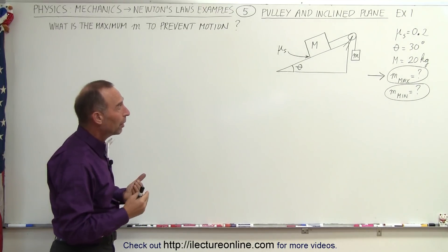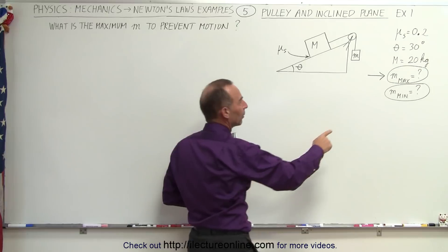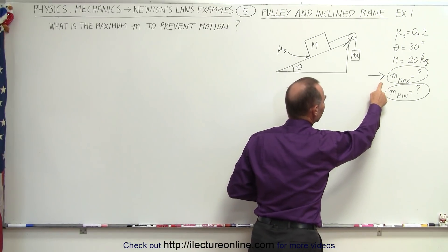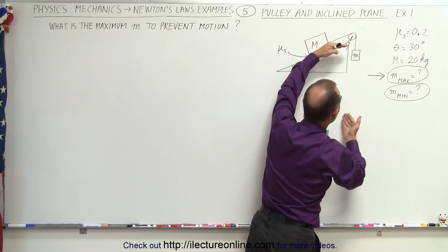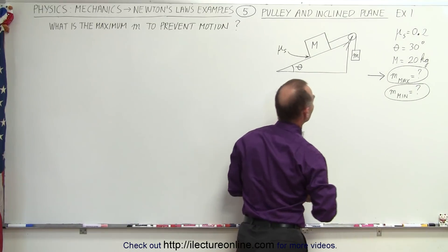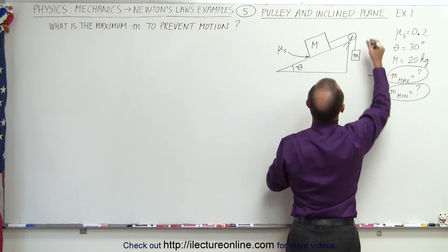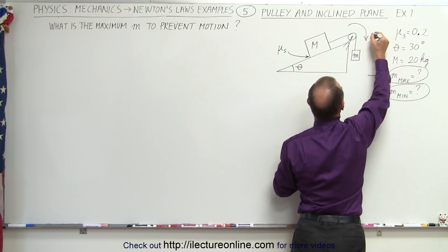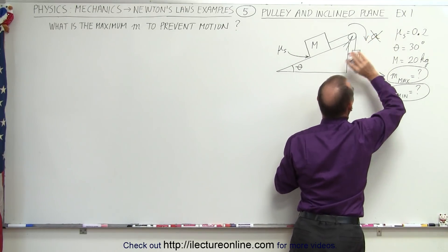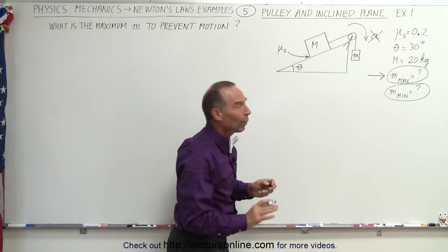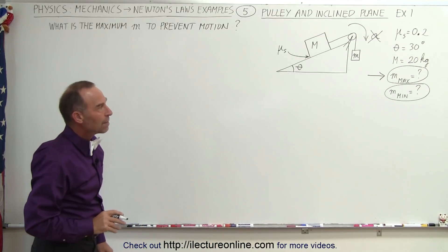We're going to do this in two parts. First, we're going to figure out what the maximum m can be to prevent the whole system from accelerating in this direction. The larger you make m, the more likely it is for the acceleration to be in this direction, but in this case you don't want to accelerate that way. So what is the maximum value small m can be?